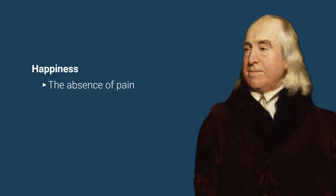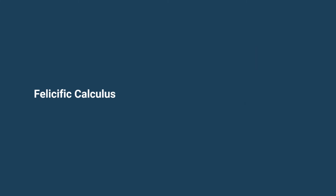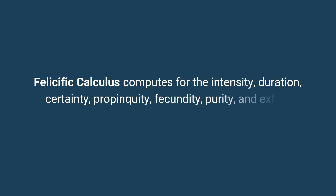In order to measure the degree of happiness or pleasure a specific action may produce, Bentham introduced the Felicific Calculus, also called the Utility Calculus or the Hedonic Calculus. The Felicific Calculus computes for the intensity, duration, certainty, propinquity, fecundity, purity, and extent of the pleasure of a specific action.